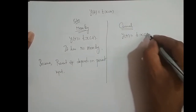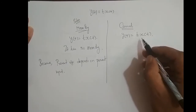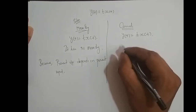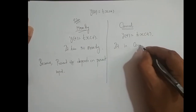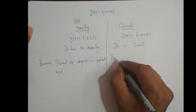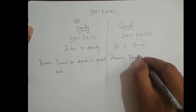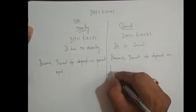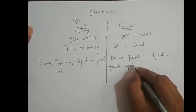Now for causality of y(t) = t·x(t): the system is causal if its present output y(t) depends on past and/or present input value. Here the present output depends upon present input value. Therefore, the system is causal, because present output depends on present input.